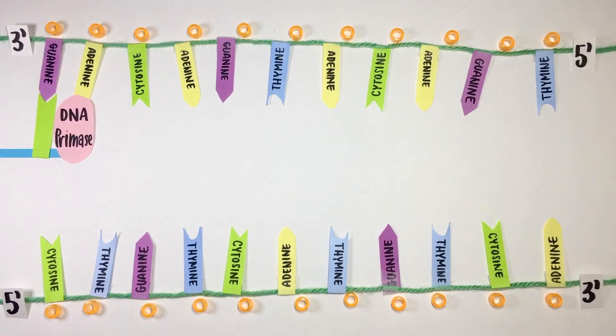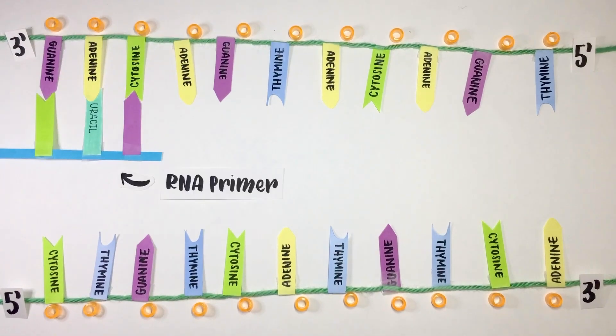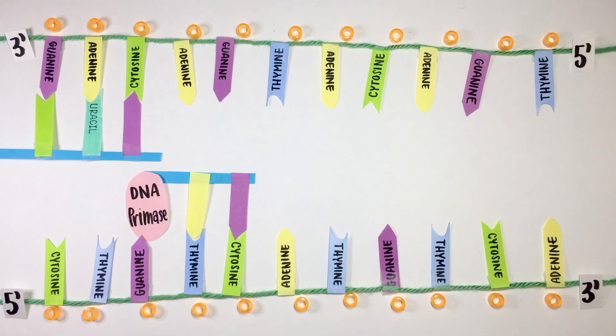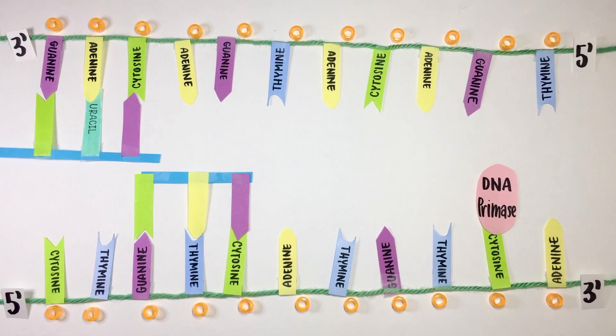An enzyme called DNA primase anneals an RNA primer which binds to the 3' end of the leading strand. This is called the starting point, or the origin of replication.